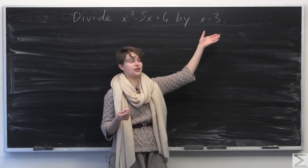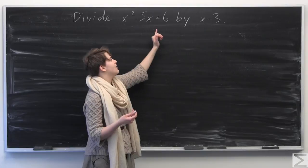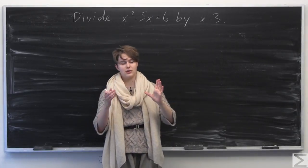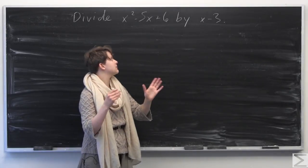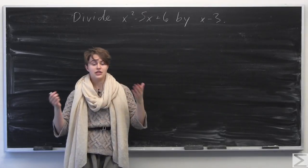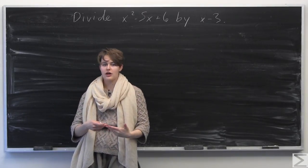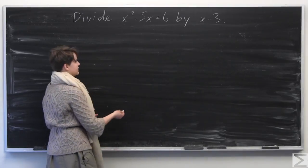x minus 3 is actually a factor of x squared minus 5x plus 6. If you factor it out you get x minus 3 times x minus 2. That's going to be a great way to check our work after we complete this problem.